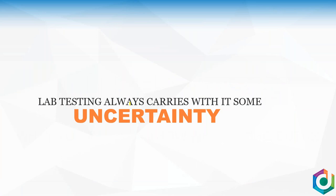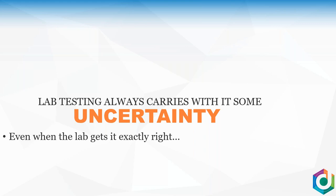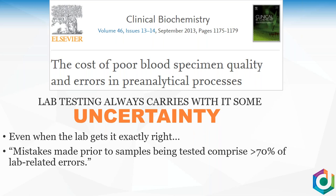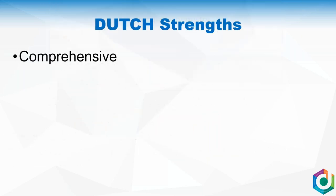We like to think of lab tests as certain, but with all lab tests there is some uncertainty. Even when the lab test gets it right, there's still uncertainty in terms of what's going on with the patient. Looking at a random study on blood testing, mistakes made before samples are even tested accounted for about 70% of lab errors — things like blood draw errors or ordering the wrong tests. With urine testing, patients can collect samples wrong or at the wrong time of the cycle.